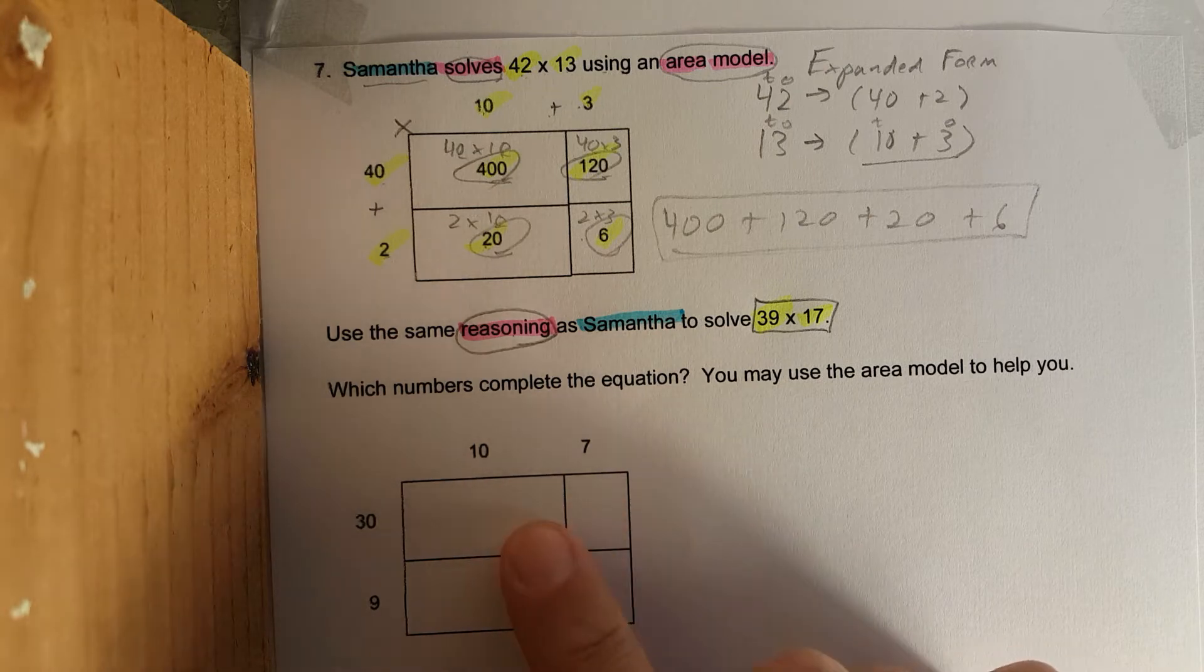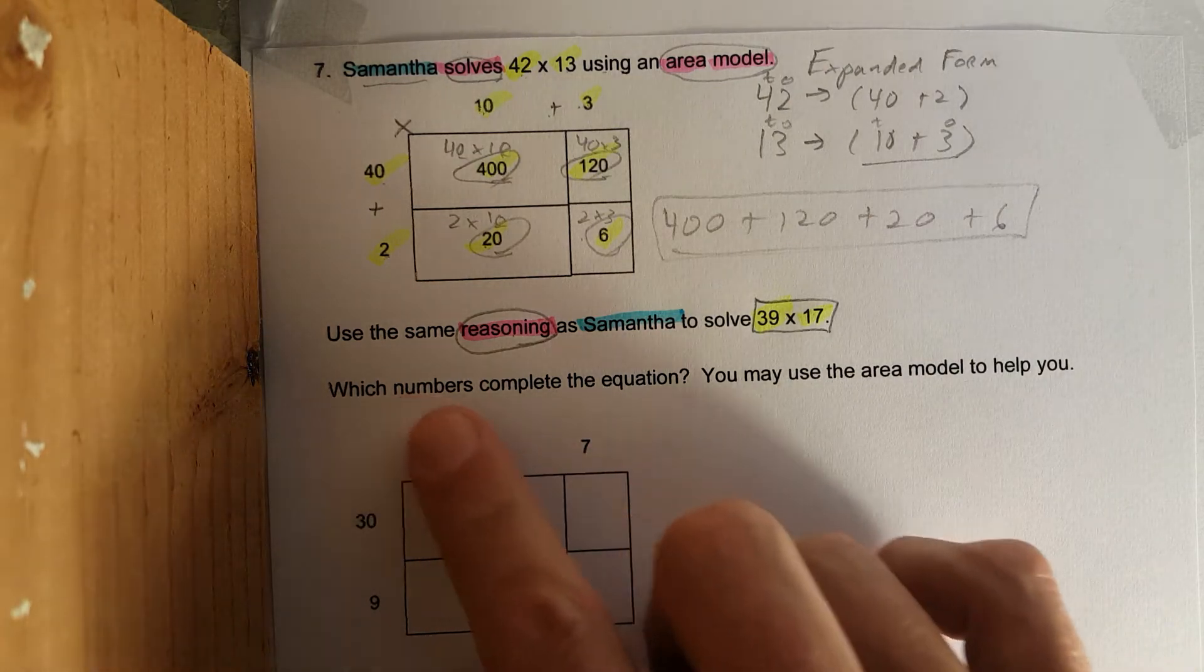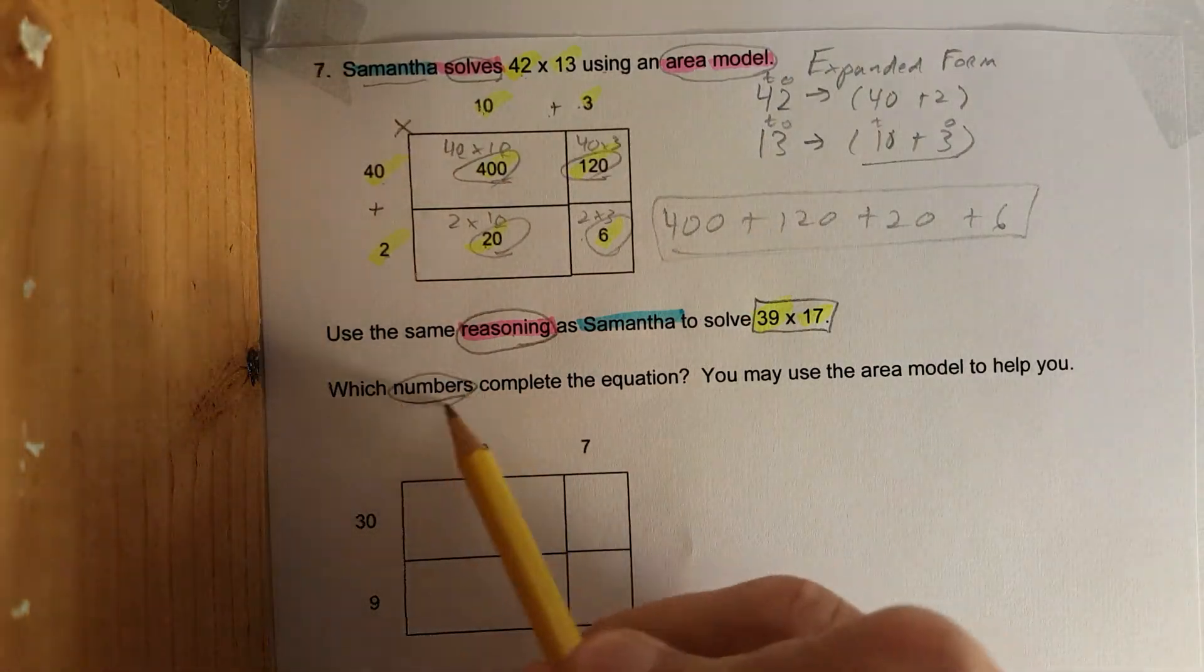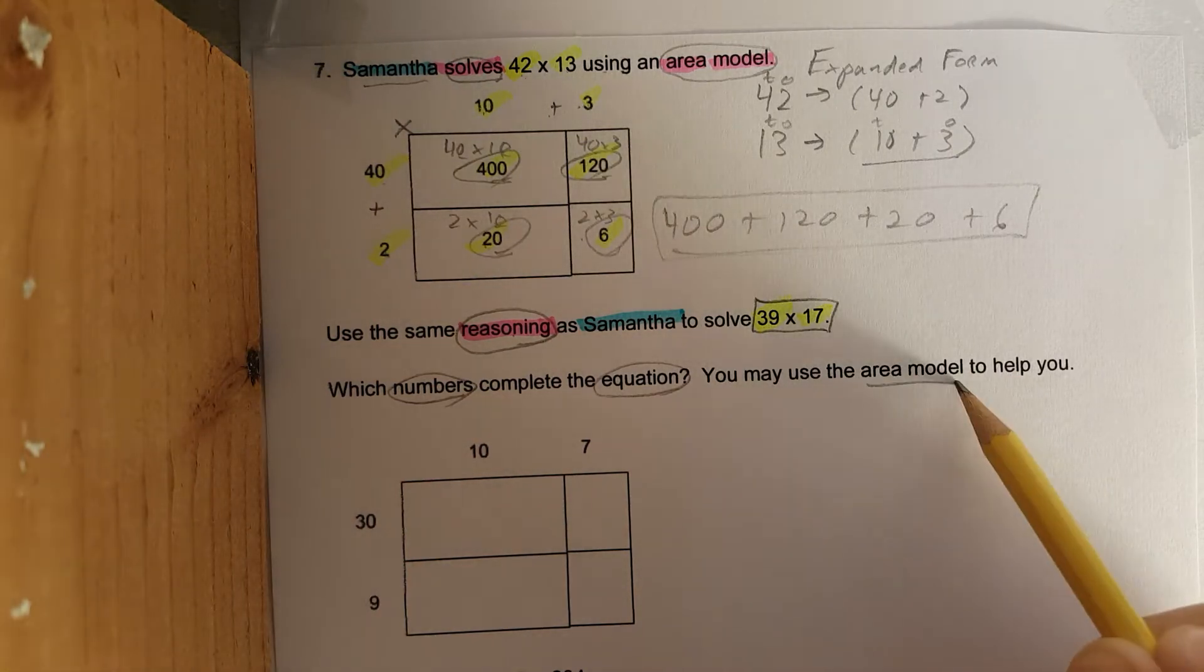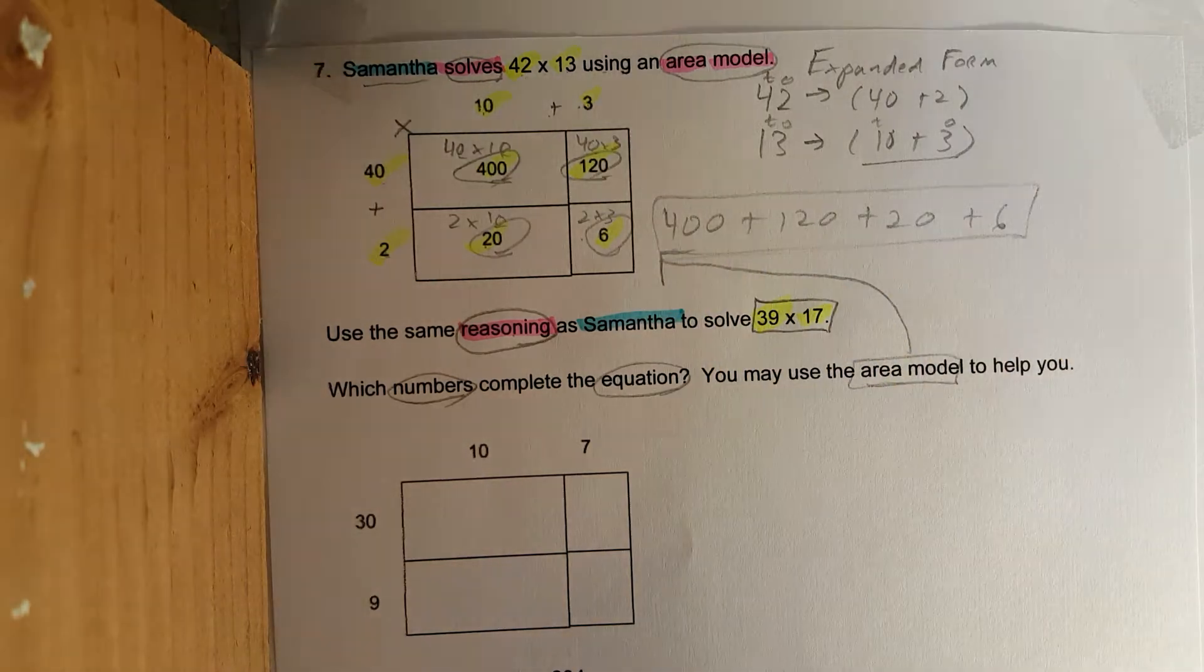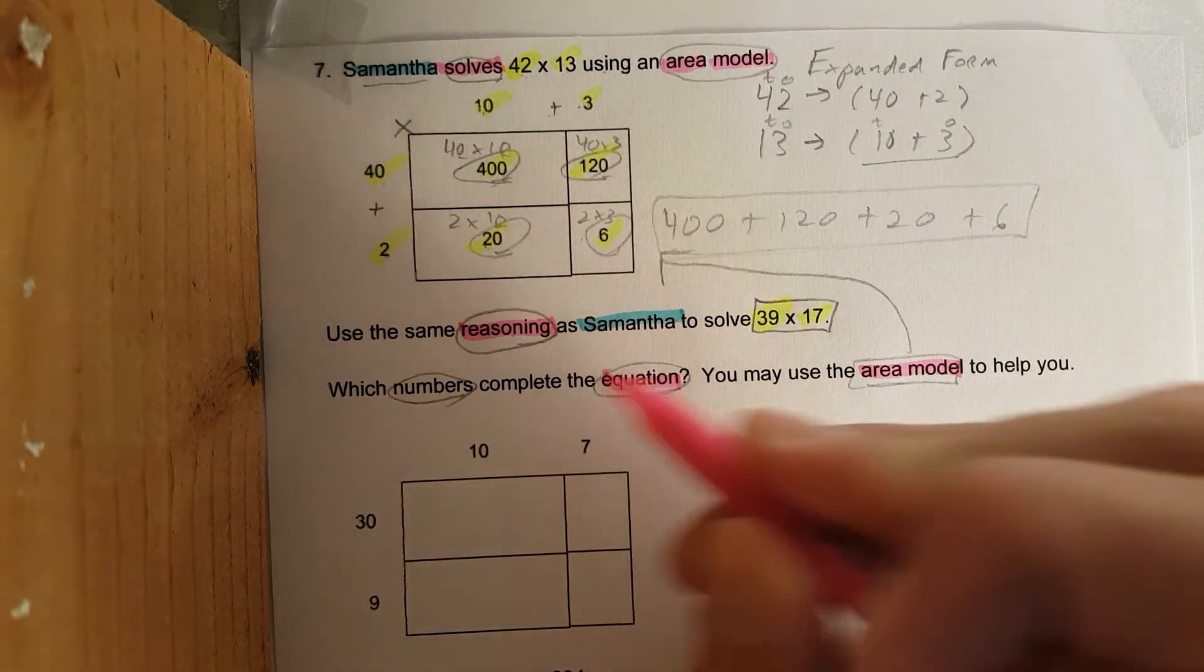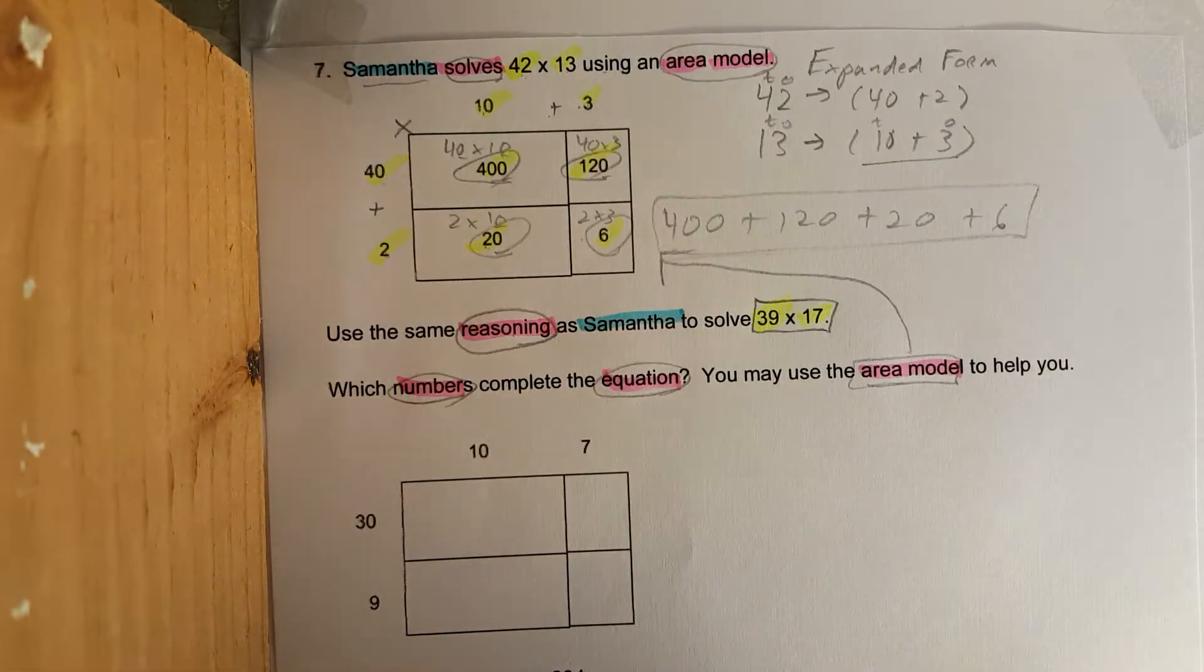So you can see the diagram right here. I will move the equation down so you can see the options, but let's keep reading. Which numbers complete the equation? You may use the area model to help you, which is all of this up here. Area model, equation, numbers. I'm going to move the camera down so you can see all of the possible answers.